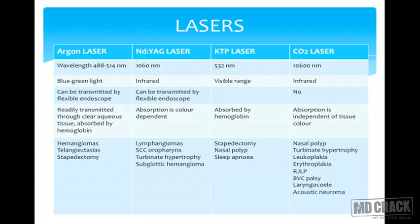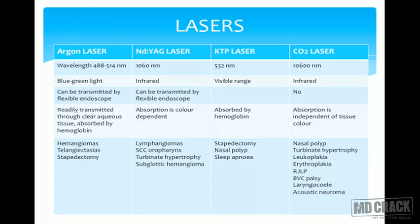Next is lasers in ENT, a very upcoming topic. The argon laser has a wavelength of around 488–514 nanometers. The Nd:YAG laser has a wavelength of 1060 nanometers. The CO2 laser has a maximum wavelength of 10,600 nanometers. Regarding color: argon has blue-green light; Nd:YAG and CO2 are in the infrared range; while the KTP laser is in the visible range.